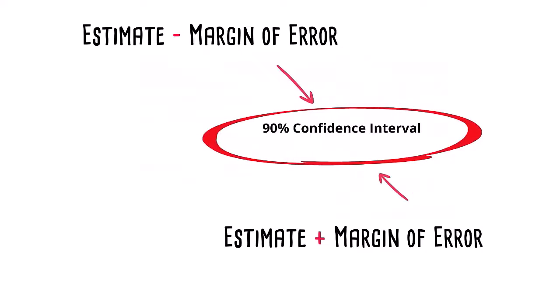Doing this defines a range expected to contain the true value 90% of the time. In other words, we're 90% confident that the true value of our estimate falls within the confidence interval range.